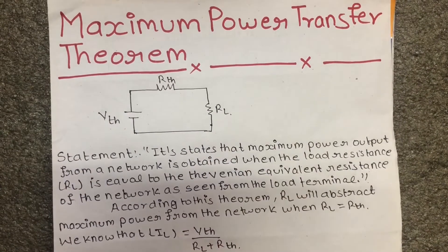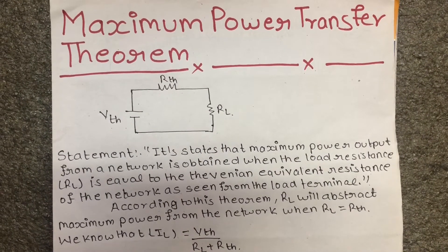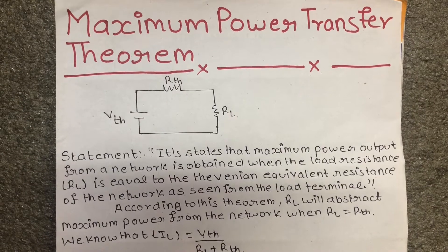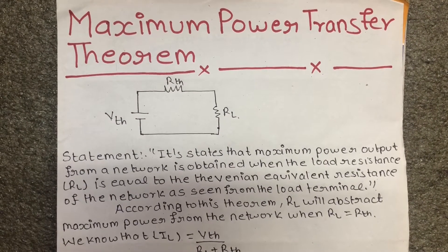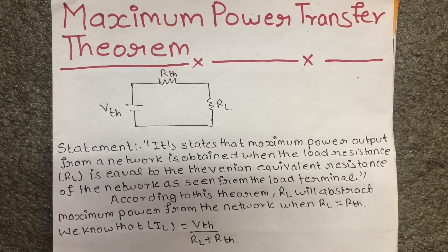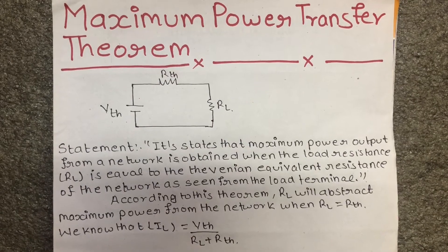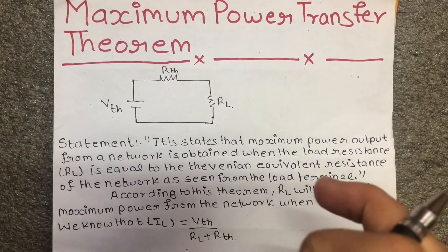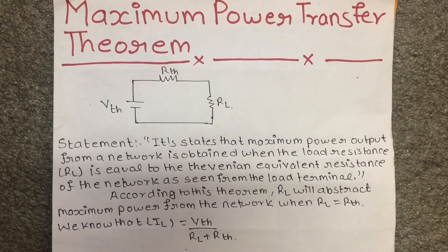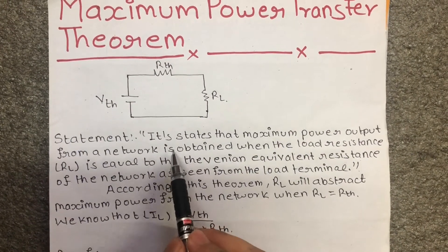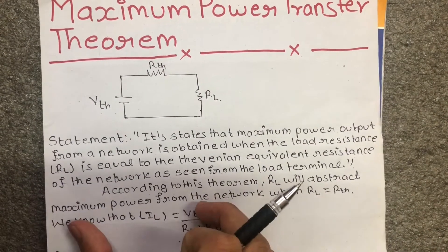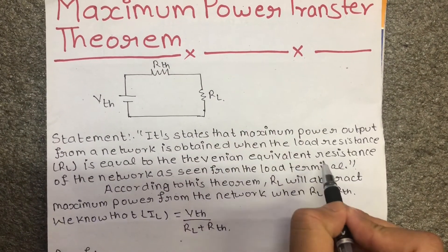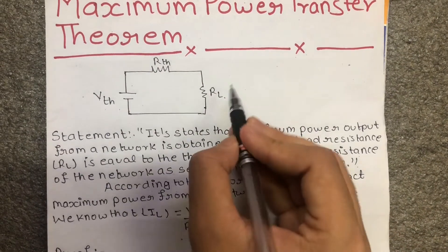When RL and Rth are equal, we get the maximum power output. The load resistance, when equal to Rth, gives maximum power transfer. The maximum power output from a network is obtained when the load resistance RL is equal to the Thevenin equivalent resistance of the network seen from the load terminal.